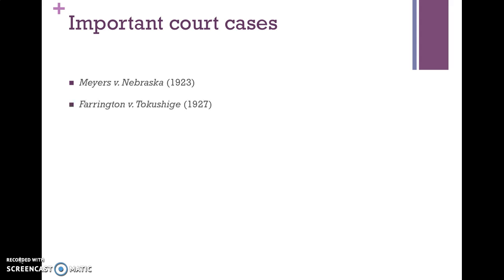A similar law was under consideration in Farrington versus Tokushige, a case in Hawaii having to do with the teaching of Japanese — also a language spoken by a country that was not an ally of the United States at that time. In this case, the school district tried to prohibit the private teaching of Japanese in Saturday schools. The court said no — if the Japanese community wants to teach their children Japanese, they can do that. Both of these cases don't have to do with instruction in public schools, but with private communities teaching their children.